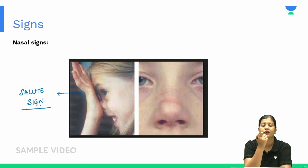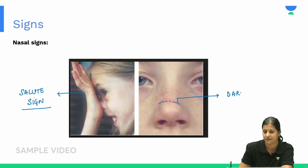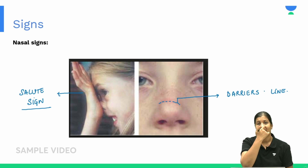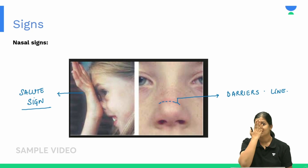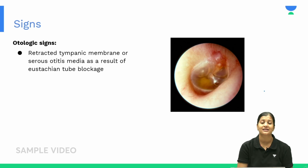Because of constant rubbing of the nose, a dark transverse line forms on the dorsum of the nose, called Darrier's line. To summarize: ocular signs include cobblestone appearance of the conjunctiva and allergic shiners; nasal signs include the salute sign and Darrier's line on the dorsum of the nose.